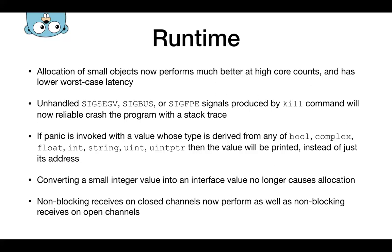Also, we have one more improvement of allocations. Now when we convert an integer value into an interface, it doesn't use any allocation. Also, the core team improved channel logic. When we receive non-blocking messages on closed channels, it takes the same performance as non-blocking receives on open channels.